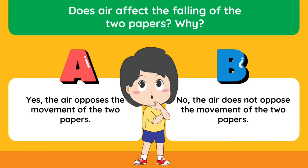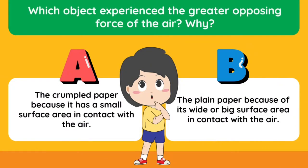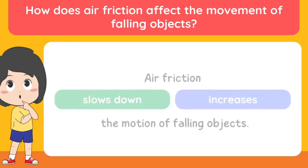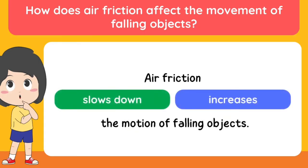Does air affect the falling of the two papers? Why? A. Yes, the air opposes the movement of the two papers. B. No, the air does not oppose the movement of the two papers. Which object experienced the greater opposing force of the air? Why? A. The crumpled paper because it has a small surface area in contact with the air. B. The plain paper because of its wide or big surface area in contact with the air. How does air friction affect the movement of falling objects? Air friction slows down the motion of falling objects.